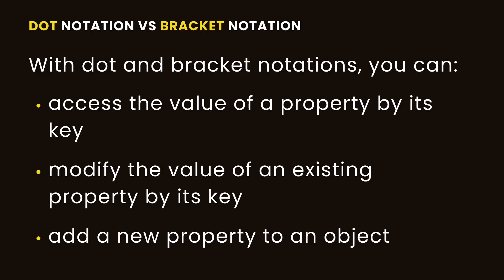With dot and bracket notation, you can access the value of a property by its key, you can modify the value of an existing property by its key, and you can also add a new property to an object. But these two approaches access properties differently, and you can have different scenarios where one is better than the other.